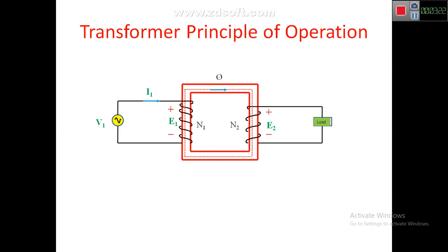So according to this diagram, N1 is more compared to N2, so E1 should be more compared to E2. So this is the case.